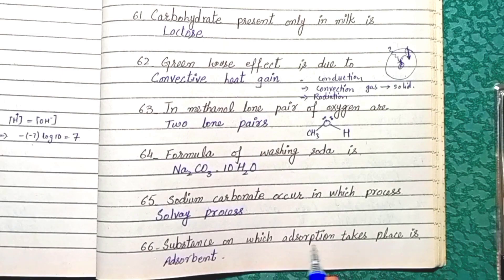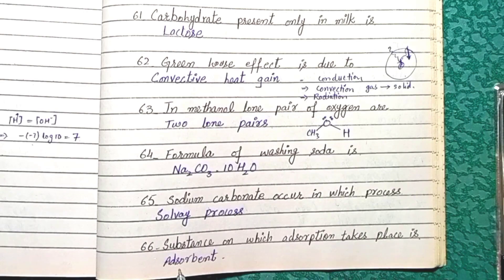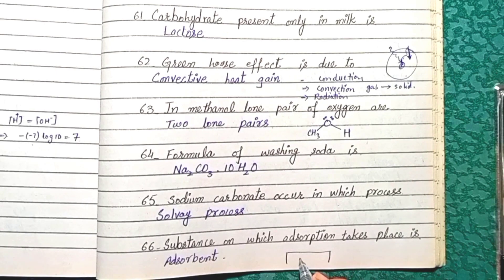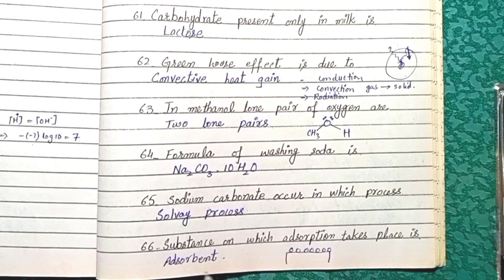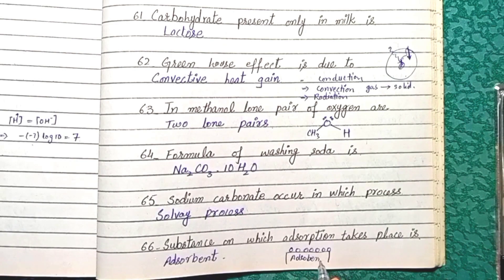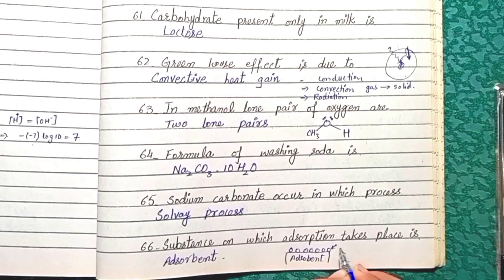Question 66: The substance on which adsorption takes place is called the adsorbent. The substance that gets adsorbed is called the adsorbate. The substance that adsorbs another chemical onto itself is the adsorbent, and the chemical being adsorbed is the adsorbate.